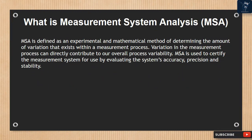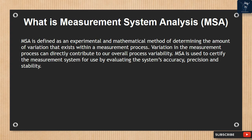What is Measurement System Analysis, MSA? MSA is defined as an experimental and mathematical method of determining the amount of variation that exists within a measurement process. Variation in the measurement process can directly contribute to our overall process variability. MSA is used to certify the measurement system for use by evaluating the system's accuracy, precision, and stability.